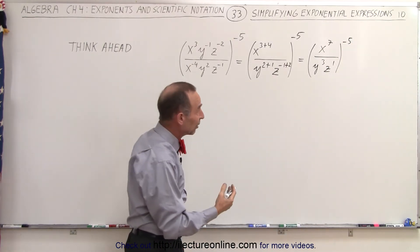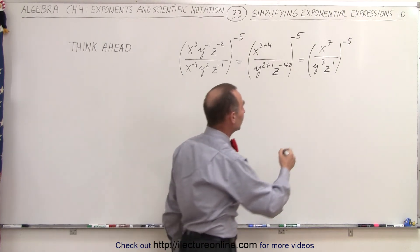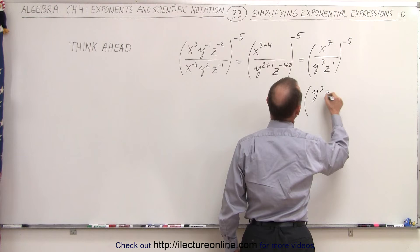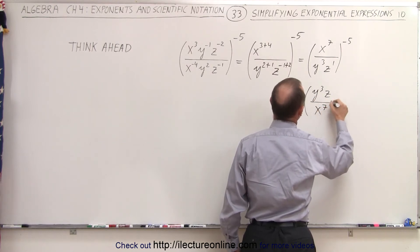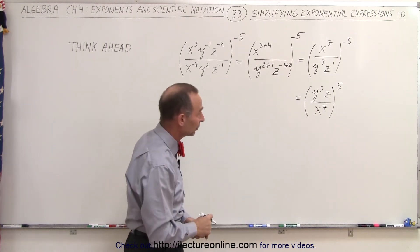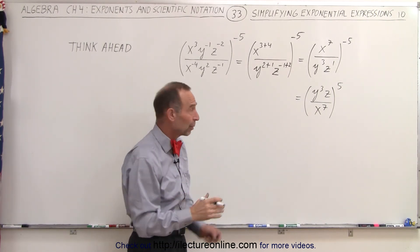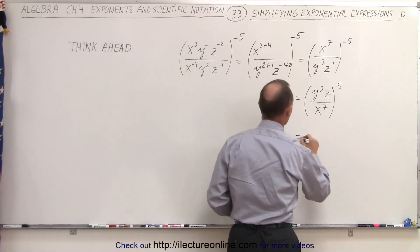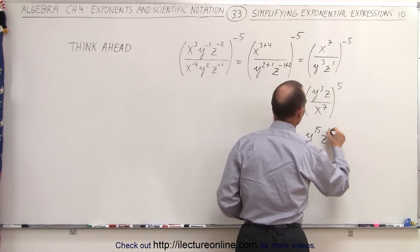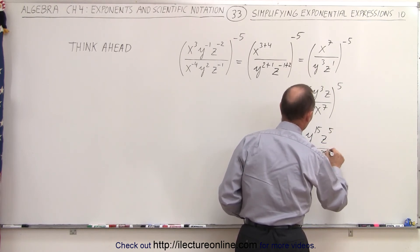To get rid of that negative 5, we simply flip everything over. So this is equal to y cubed times z divided by x to the 7th power, all raised to the positive 5 power, simply by flipping the fraction over. Then we apply the exponent — when an exponent is raised to an exponent, we multiply. So this becomes y to the 15th power times z to the 5th power divided by x to the 35th power.